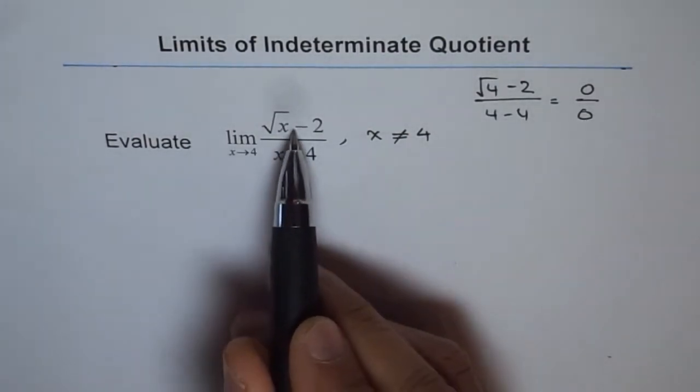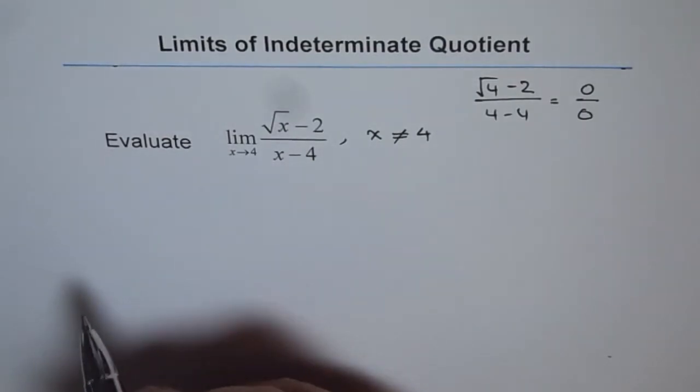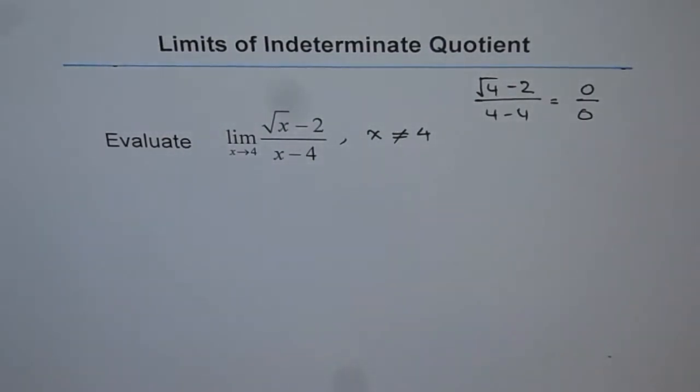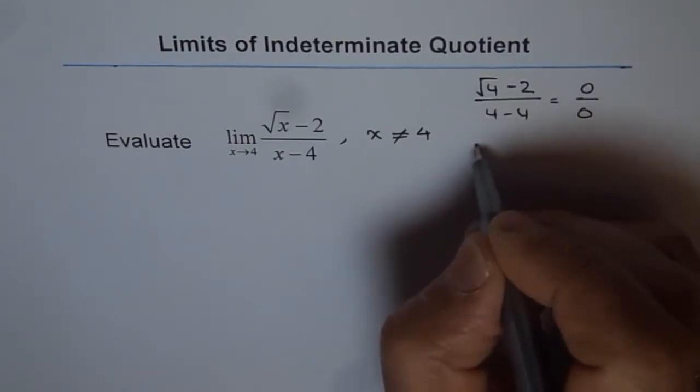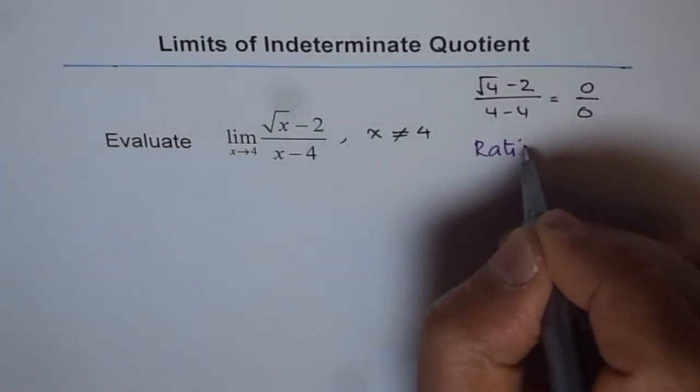Denominator, you can see. Numerator, we can factor and figure it out. Now, factoring is one option. Second, whenever there are square roots, then I will prefer rationalization. So, I will solve this problem with the help of rationalization.